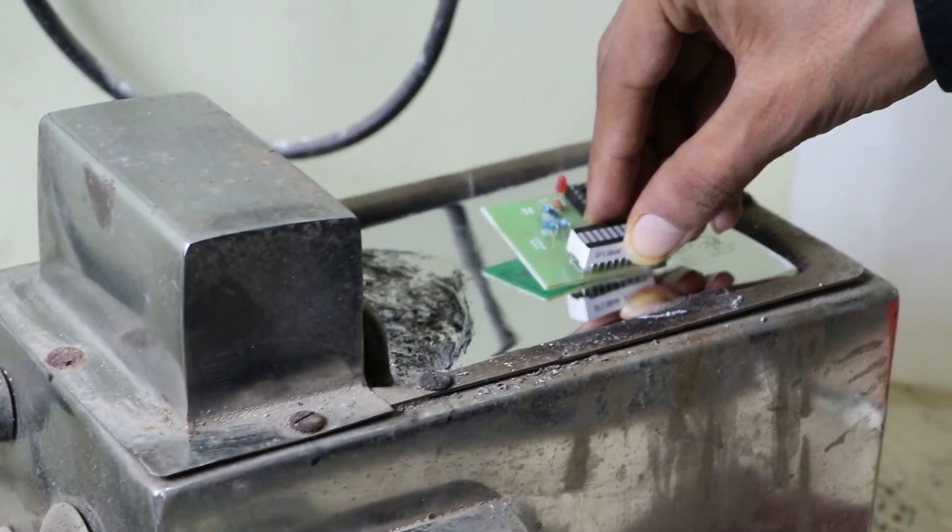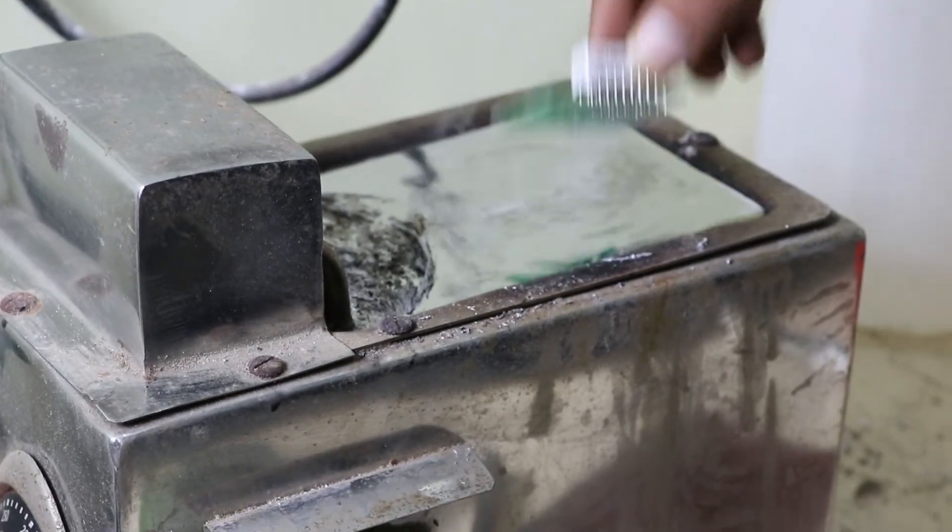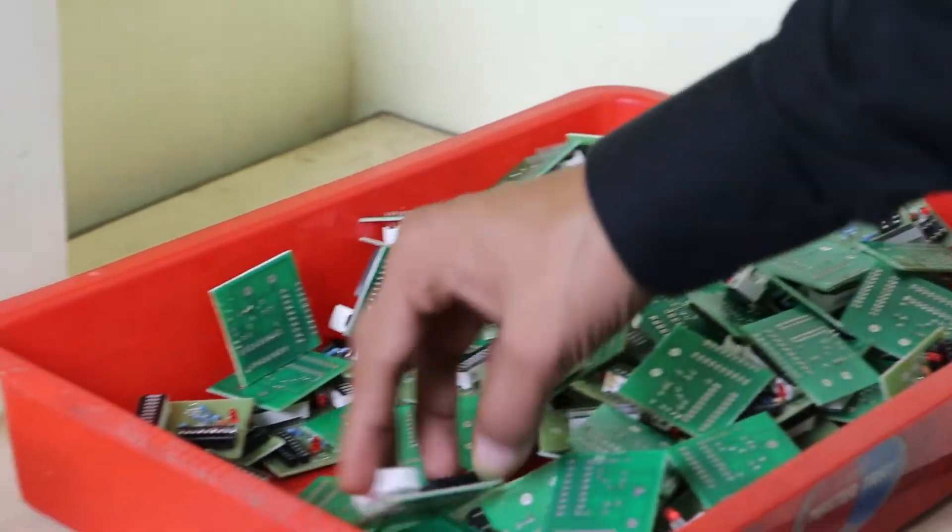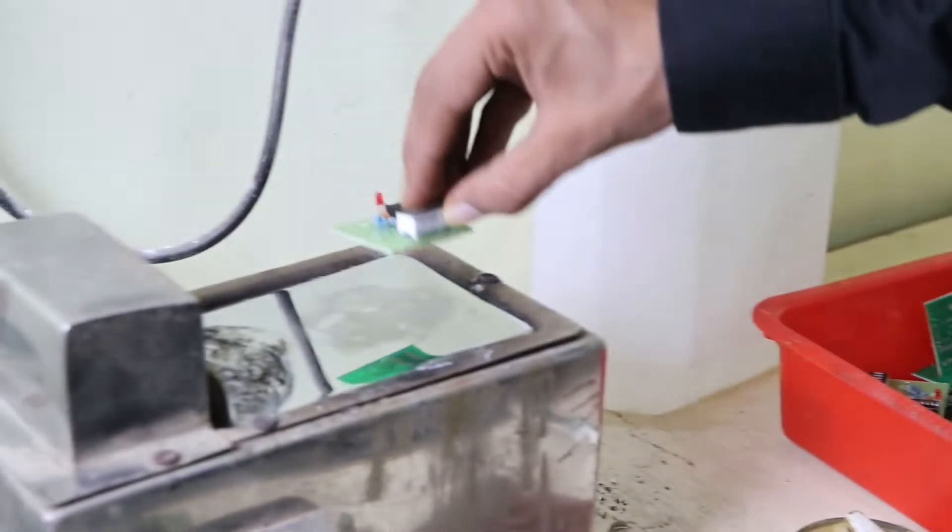The angle is very important while immersing and taking out the PCB from molten solder. Don't leave the PCB in for too long - delicate components like LEDs will burn out if exposed for a longer period.